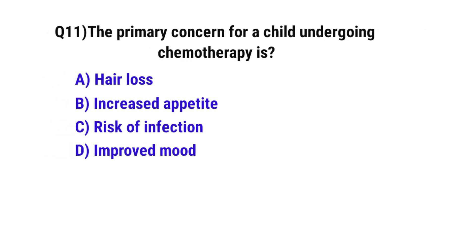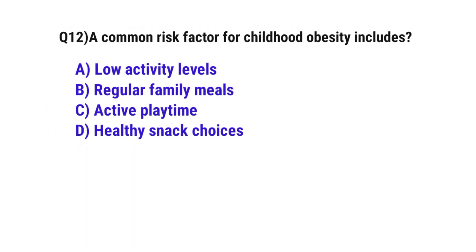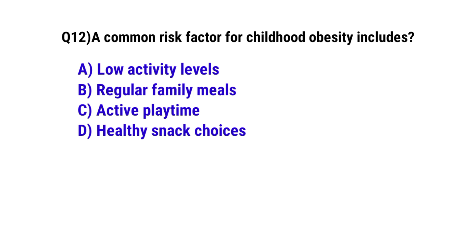Question 11: The primary concern for a child undergoing chemotherapy is — the correct option is C: Risk of infections. Question 12: A common risk factor for childhood obesity includes — the correct option is A: Low activity levels.